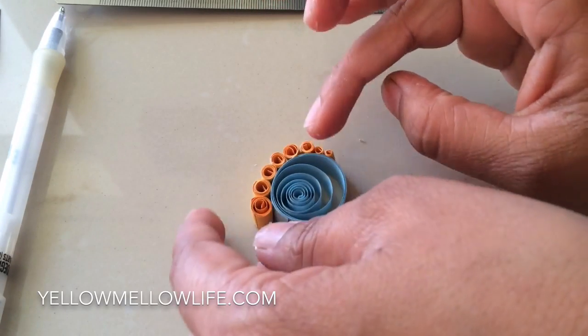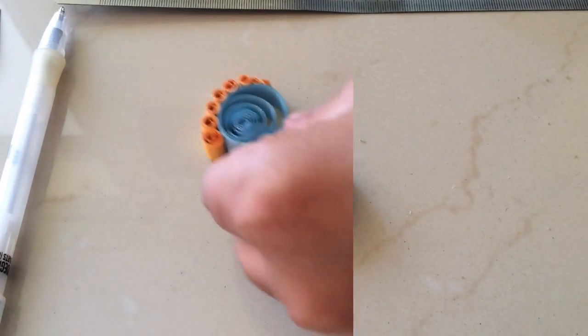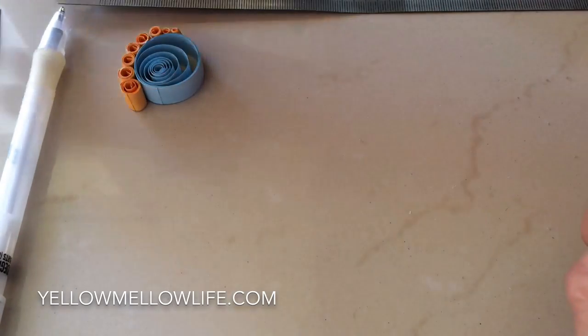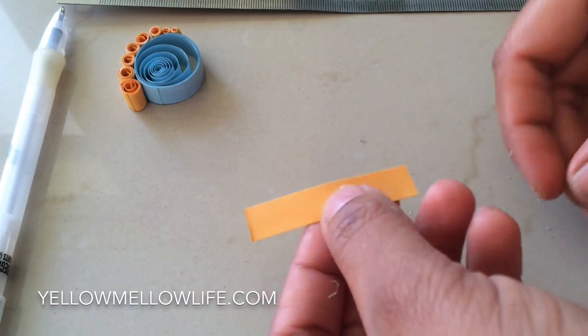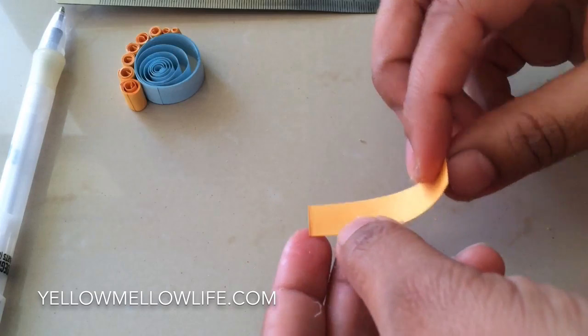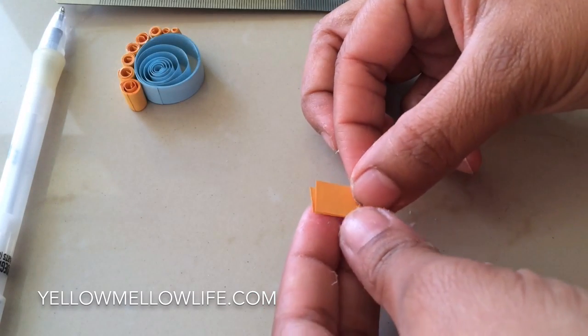So I'm going to let this dry before I do the next step. I'm going to keep it away and start with the antenna of my snail. So this is a two-inch strip that I have taken. I'm just going to fold it.